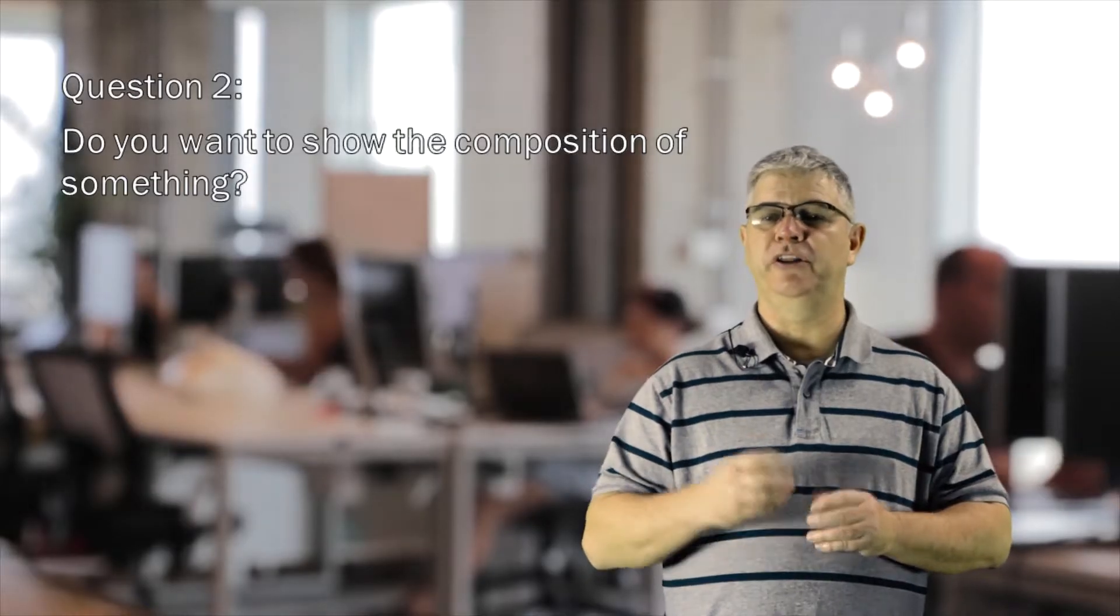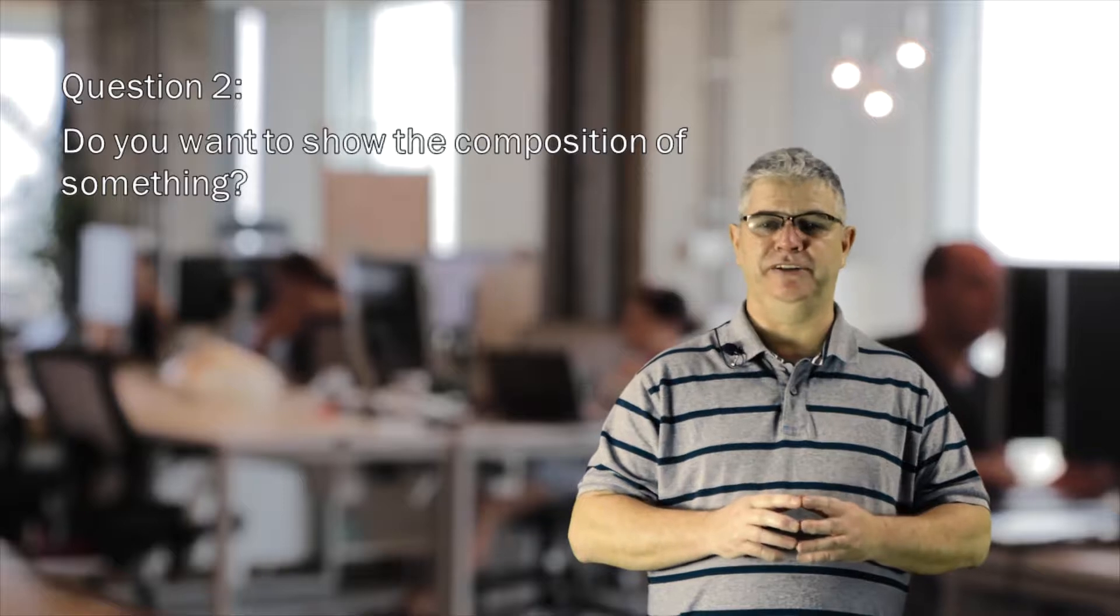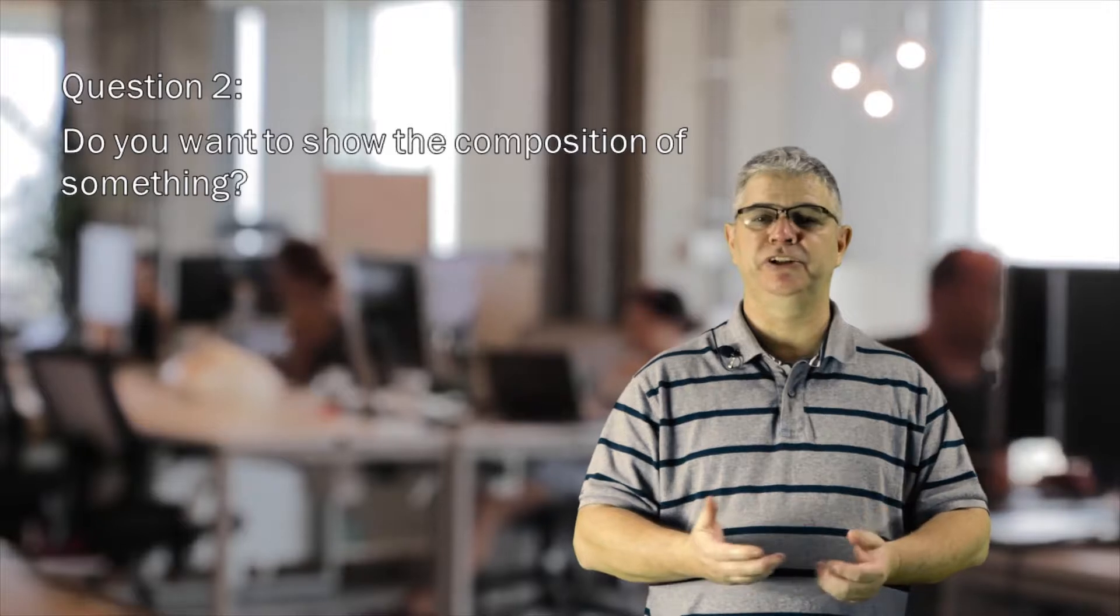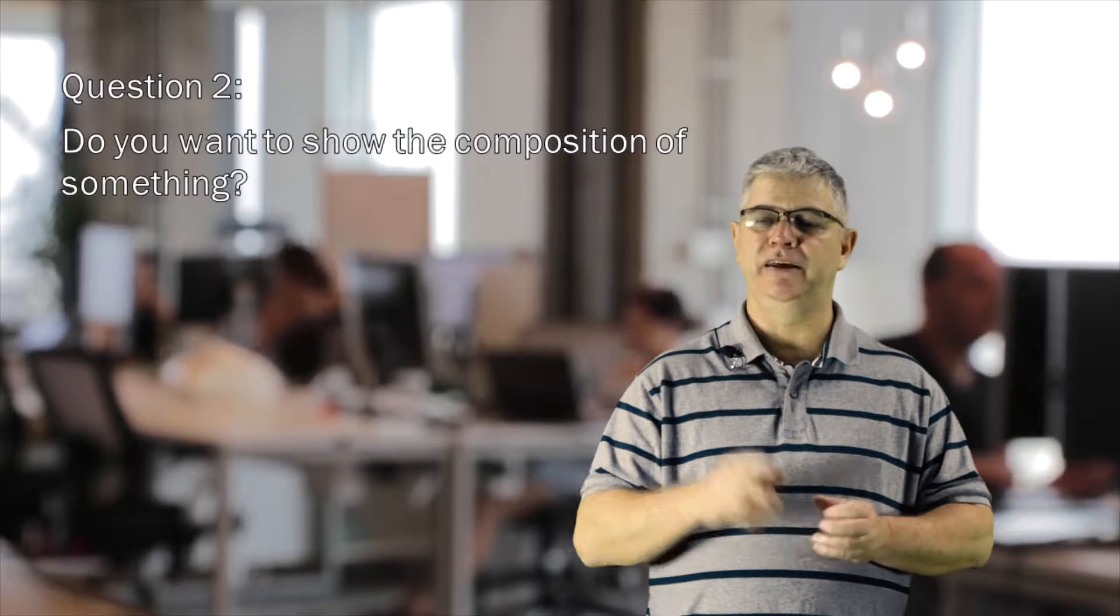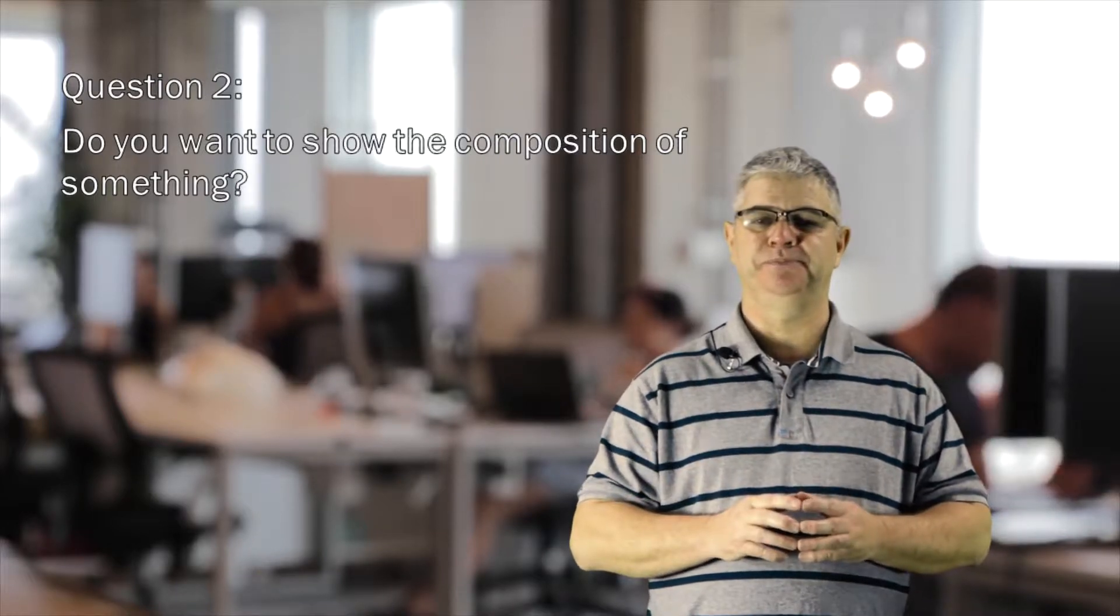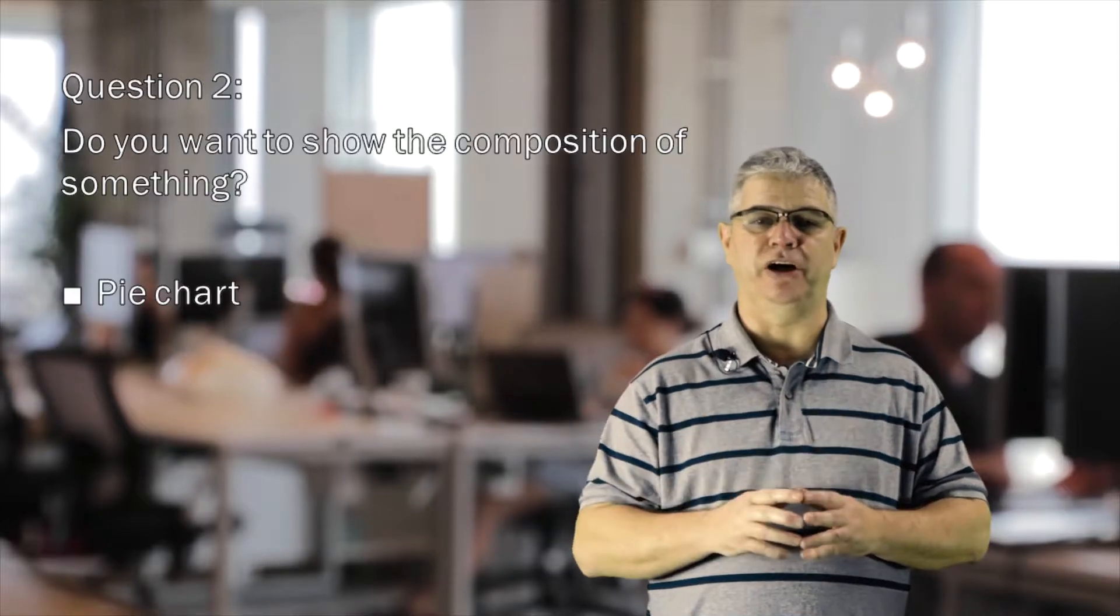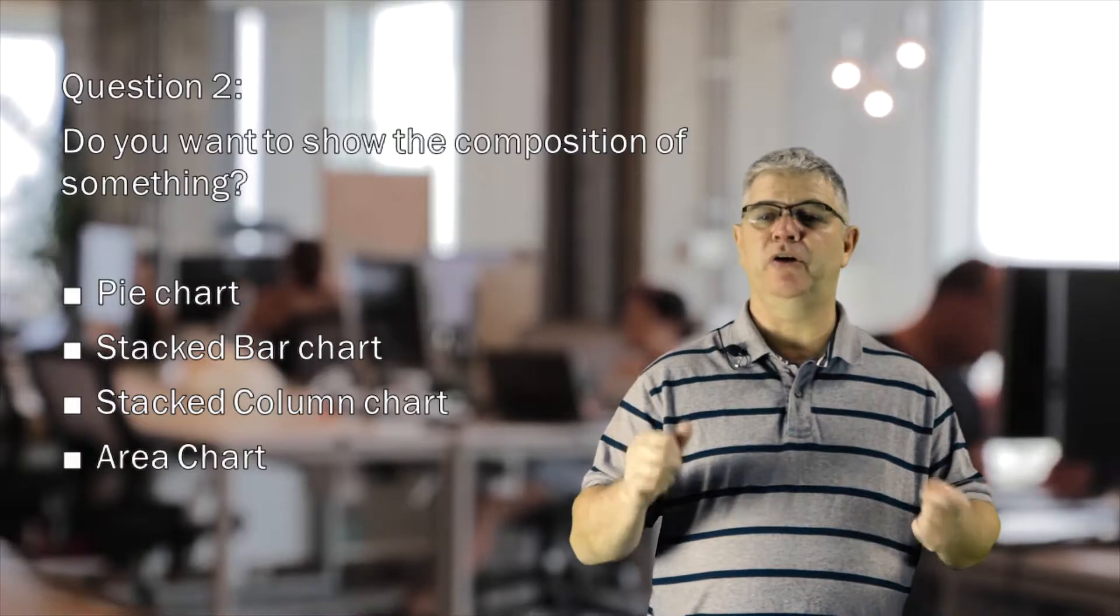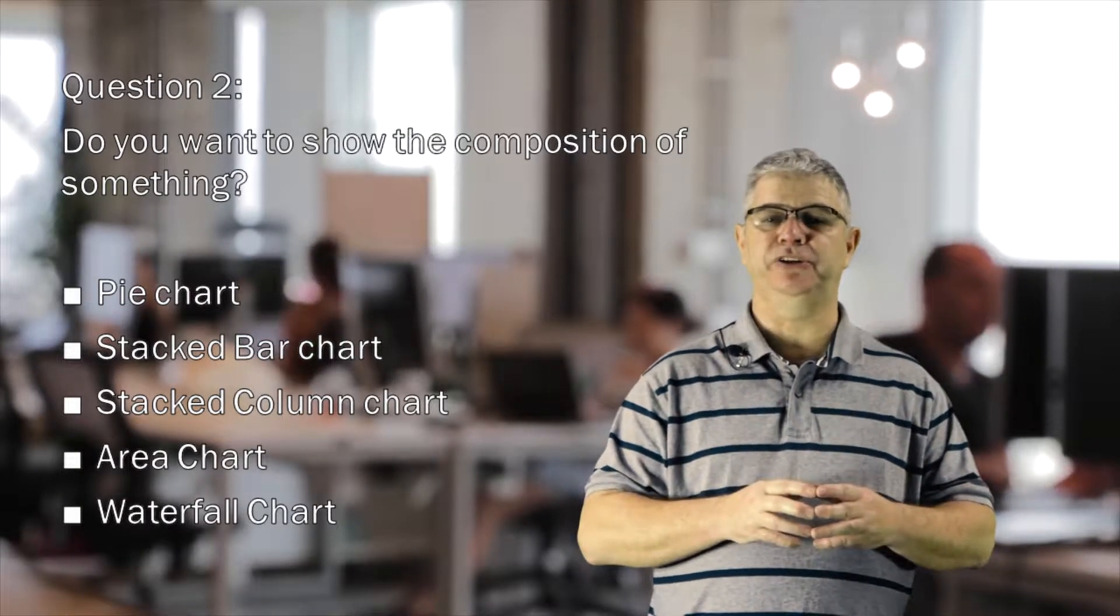Question two you should ask yourself: Do you want to show the composition of something? We might use a chart like this to show how individual parts make up the whole of something, such as phone types used by the people of Taiwan to illustrate quickly and clearly the most popular brands. To show composition we might use a pie chart, a stacked bar chart, a stacked column chart, an area chart, or a waterfall chart. Again, the main charts to use are covered in the lesson.